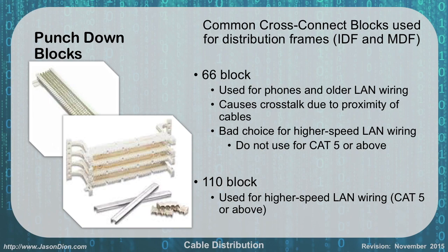Inside of our intermediate distribution frames, we have punch-down blocks. There are two main types you're going to find in your distribution frames: the 66 and the 110. The 66 is solely used for voice at this point, and used to be used for old LAN wiring as well with CAT3 networks. It has a very close proximity of each cable to each other, causing more crosstalk.